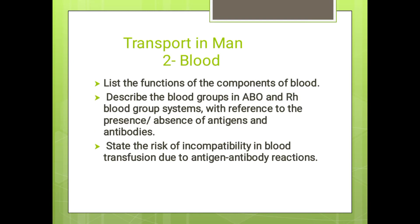After transport in plants, next we will discuss transport in humans — how transportation occurs in humans with the help of blood. The topics we will cover include: list the functions of components of blood, and describe the blood groups in ABO and Rh blood group systems with reference to the presence or absence of antigens and antibodies.